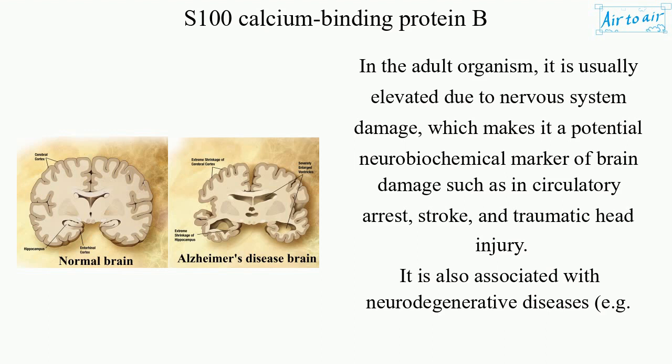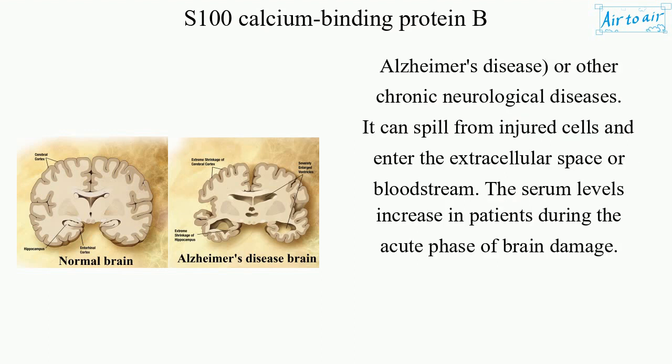It is also associated with neurodegenerative diseases, e.g. Alzheimer's disease, or other chronic neurological diseases. It can spill from injured cells and enter the extracellular space or bloodstream. The serum levels increase in patients during the acute phase of brain damage.